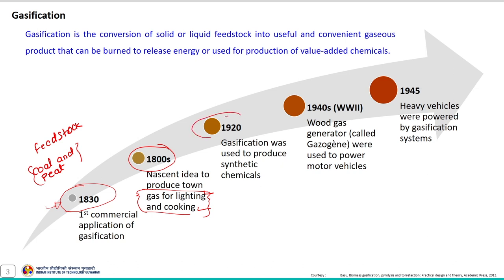Around 1920, a major shift came in this field when gasification was used to produce synthetic chemicals. During World War II, biomass gasification played a significant role when, due to the shortage of petroleum, wood gas generators were used to produce gasogen — also called gasogen — to power motor vehicles. By 1945, even heavy vehicles were powered by gasification systems.